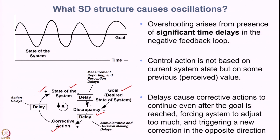Overshooting arises from the presence of significant time delays in negative feedback loops. A control action is not based on the current system state but on some previously perceived values — there is a delay in understanding the current state and acting on it. These delays cause corrective actions to continue even after the goal is reached, forcing the system to adjust too much and triggering a new correction in the opposite direction, resulting in overshooting and then undershooting the goal.